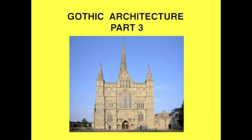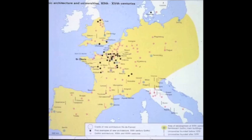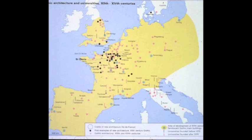We're going to continue talking about Gothic architecture today. Gothic architecture, as you can see from this map, has a strong concentration in France, around Paris, in the area called Ile-de-France, but it begins to spread quite rapidly throughout Europe.